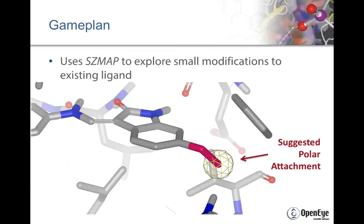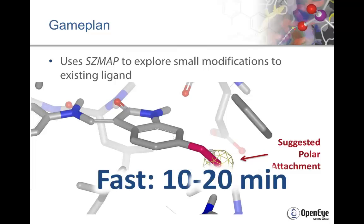Game Plan can also explore small ligand modifications up to two bonds away from the ligand. In the example shown here, it suggests a two-bond moiety that picks up a good polar interaction with the binding site. Game Plan is also very fast — in 10 to 20 minutes, you can analyze your binding site and be provided with a set of hypotheses for ways in which you might modify your ligand.